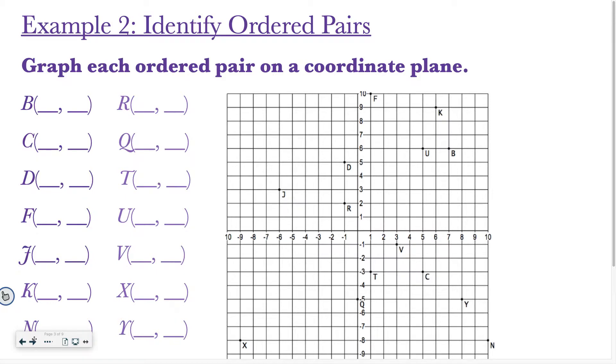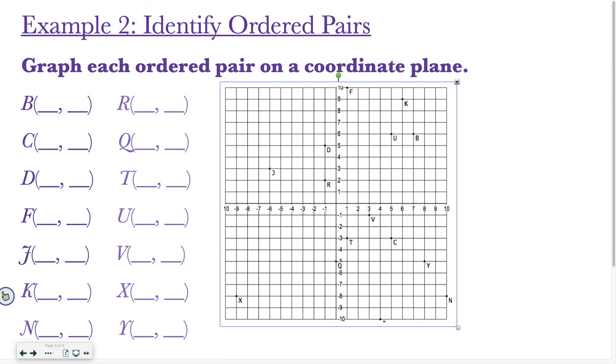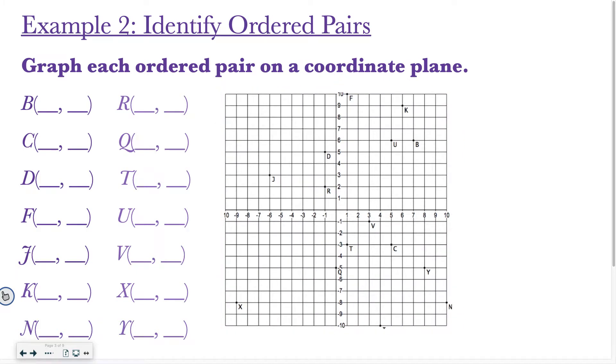All right, now let's look at identifying ordered pairs, so the opposite of what we were just doing. This time, we start with all of the letters on the graph, and we have to write where they are. So, I'm going to look for point B, and I see that it is located right up here, and I see that's 7 in the x direction, and 6 in the y direction, so I'm going to write (7, 6). Again, remember, you always do x, then y.